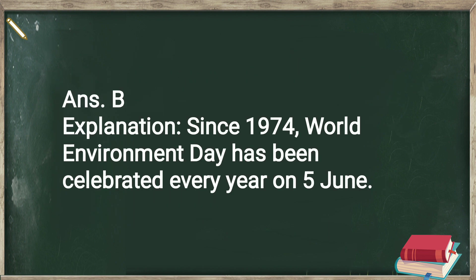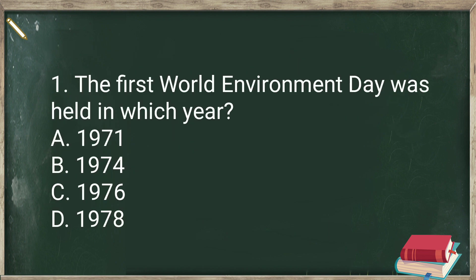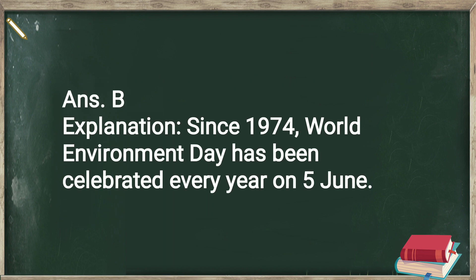The first question: In which year was the World Environment Day first held? It was held in 1974, so B is the correct answer. World Environment Day has been celebrated every year on 5th June.